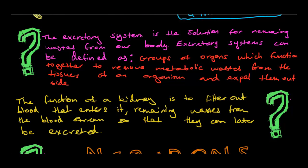What is the excretory system? The excretory system is a solution for removing waste from our body. Excretory systems can be defined as groups of organs which function together to remove metabolic waste from the tissues of an organism and expel them outside. So the excretory system is a group of organs which aims to get rid of waste that builds up in tissues through metabolic functions.